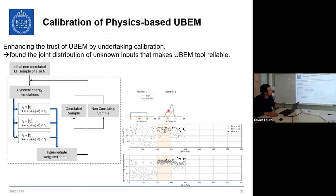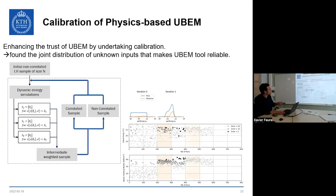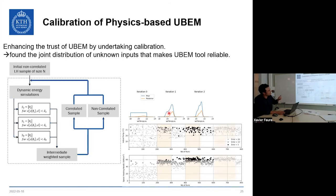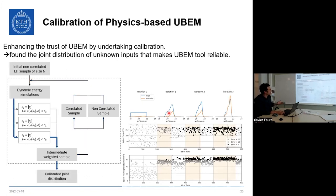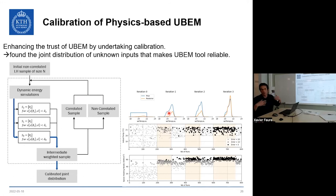This queuing process uses the former posterior as the prior for the next sampling round, iteratively feeding the joint distribution. At the last stage, the amount of correlated samples is increased. Once at least 100 good combinations — matching the model well — are found, the calibrated joint distribution is considered converged and ready for use.